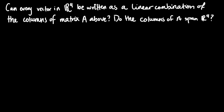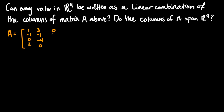We're given A. A is equal to: 1, negative 1, 0, 2, 3, negative 1, negative 4, 0, 0, negative 1, 2, 3, 3, 1, negative 8, negative 1.